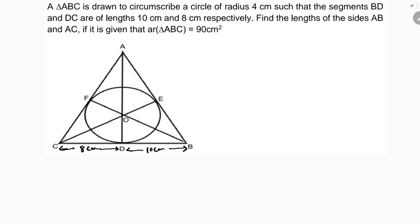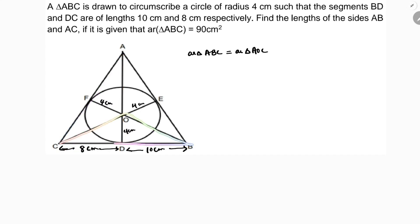The radius is 4 centimeters throughout. To find area of triangle ABC, I'll break it into three triangles: area of triangle AOC, plus area of triangle COB, plus area of triangle AOB.